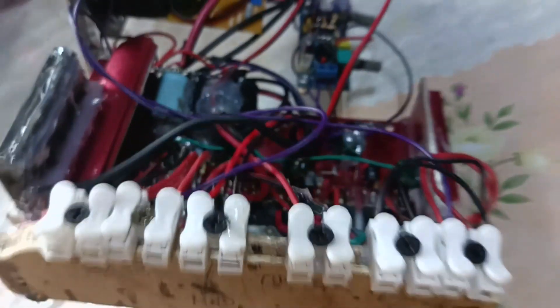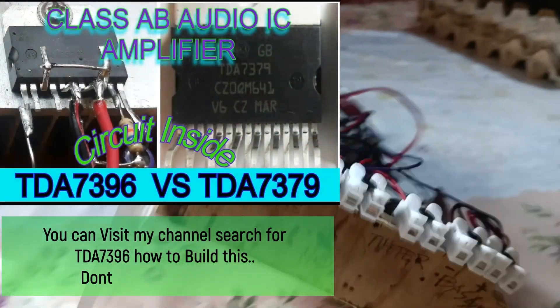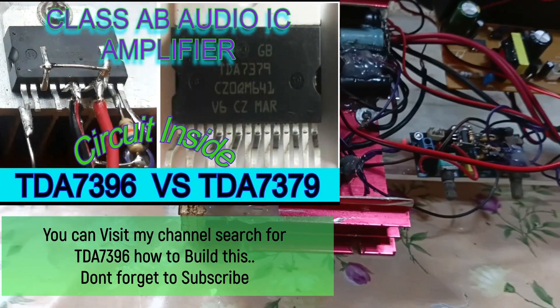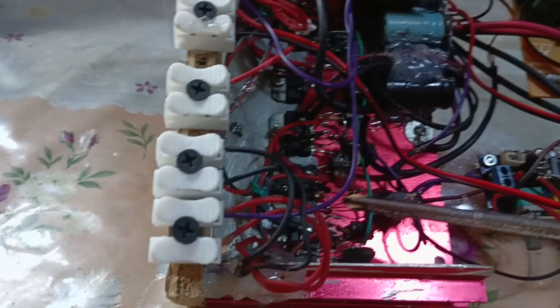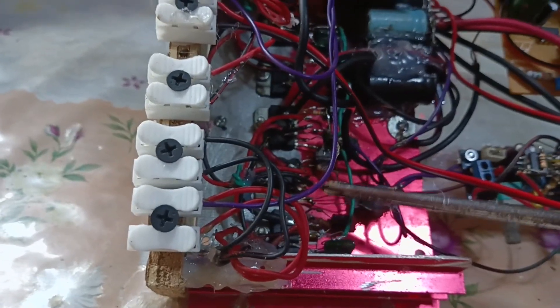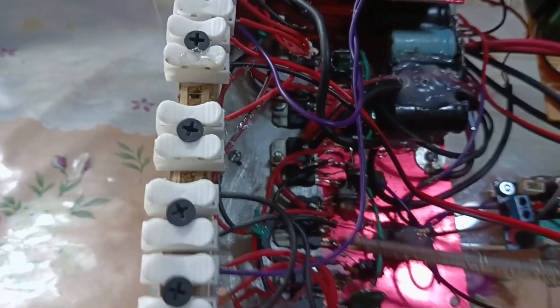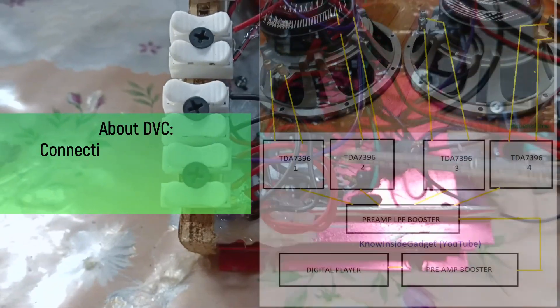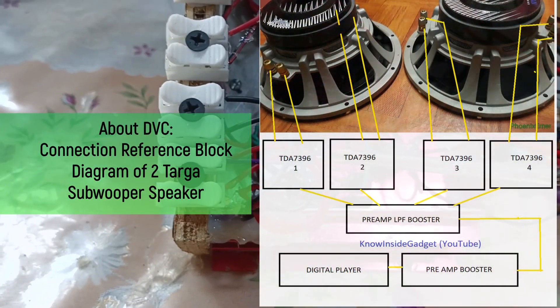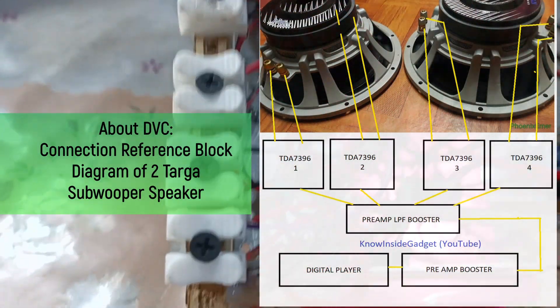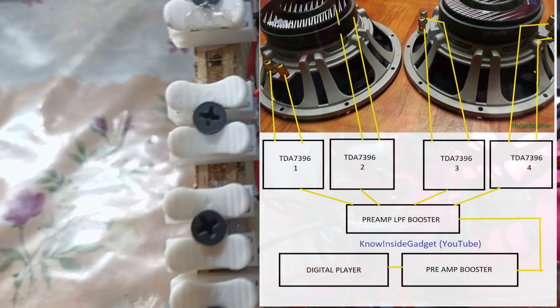Naka-separate yan sa bawat IC. Kung gusto nyo malaman kung paano ko ginawa yung IC na TDA 7396, isang 60 watts RMS ang bawat isa. Ang gumagana sa bass niyan ay dalawa. Dalawang IC para sa isang DBC, dalawang IC rin para ng DBC.